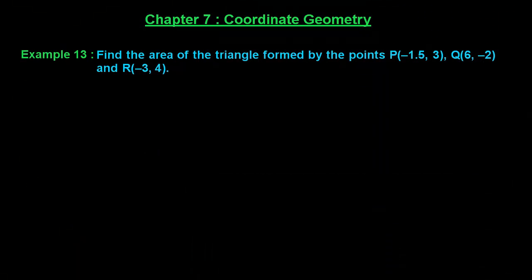Let us solve example number 13 of chapter 7. The example says find the area of the triangle formed by the points P(-1.5, 3), Q(6, -2), and R(-3, 4).